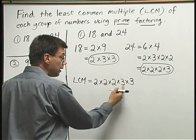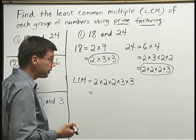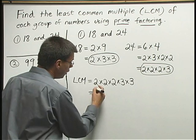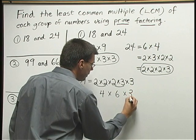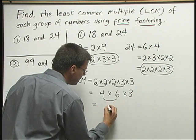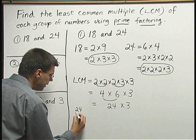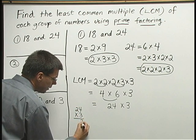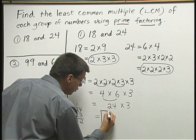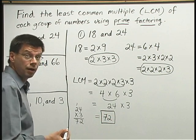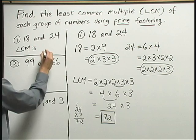Now I have my 2's and my 3's. I multiply all these numbers back together to find the LCM. 2 times 2 is 4, times 2 is 8, times 3 is 24, times 3 is 72. So 72 is the LCM of 18 and 24.